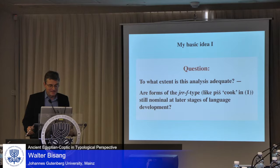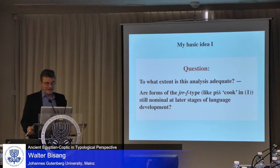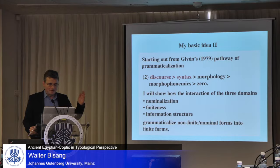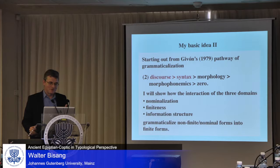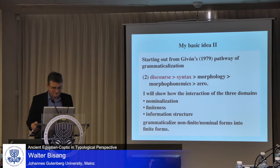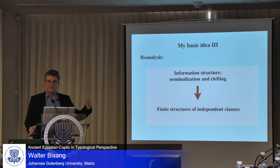Now the question I would like to address is: to what extent is this analysis adequate? Are forms of this particular type — like the form in which we find 'cook' in example one — still nominal at a later stage of language development? Starting out from Givón's famous pathway of grammaticalization, who states that what was discourse in the past can become syntax in the present, I will focus on discourse becoming syntax. I will show how the interaction of three domains — nominalization, finiteness, and information structure — cooperate in grammaticalizing non-finite nominal forms into finite forms.